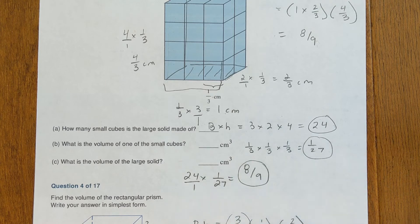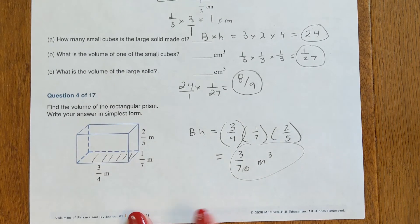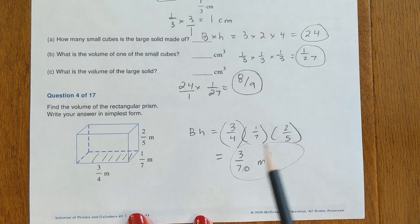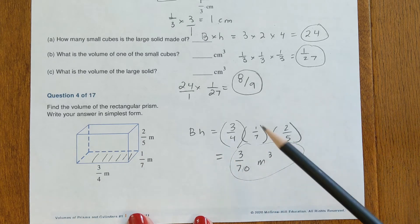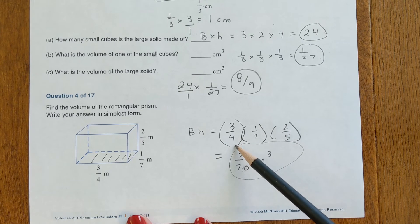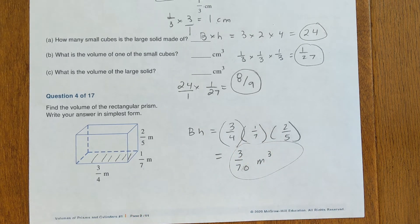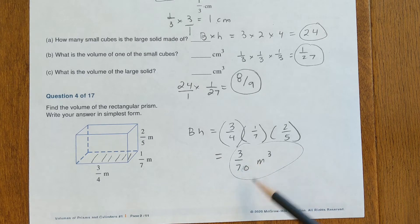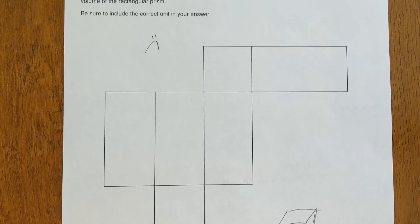24 over 27 reduces to eight-ninths when you divide both numbers by three. Number four is another rectangular prism: area of the base times the height. The base is a rectangle, so length times width: three-fourths times one-seventh, then times the height of two-fifths. On a calculator, do three divided by four times one divided by seven times two divided by five — hit math, enter, enter — and you get three over seventy.